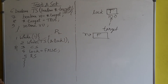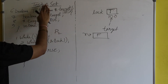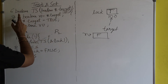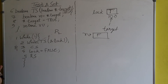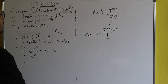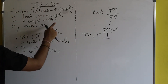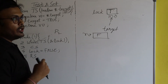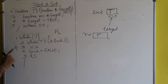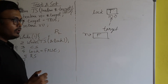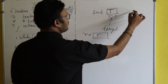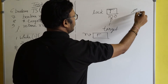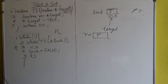Most importantly, the test-and-set function is an atomic function — when this function is being processed, interleaving can't happen. When the function completes, the lock value has become true, meaning the critical section is not empty. Initially lock was false; P1 set it to true before entering the critical section.